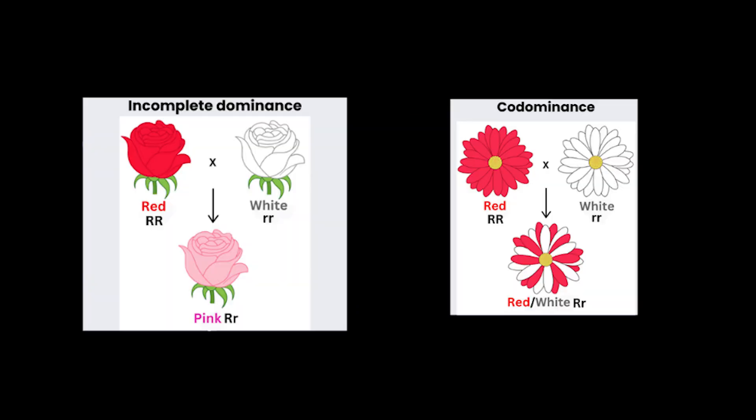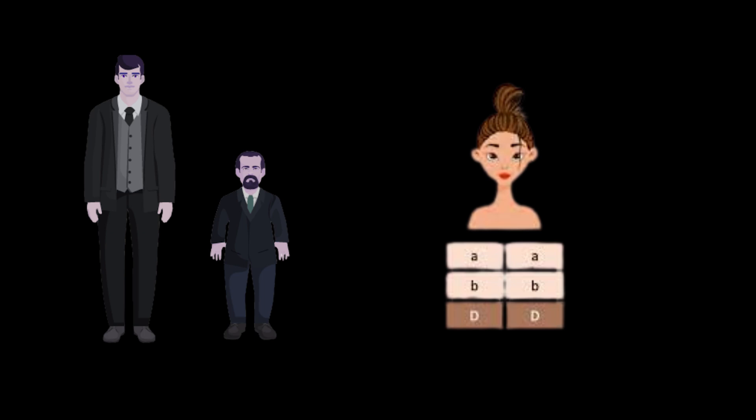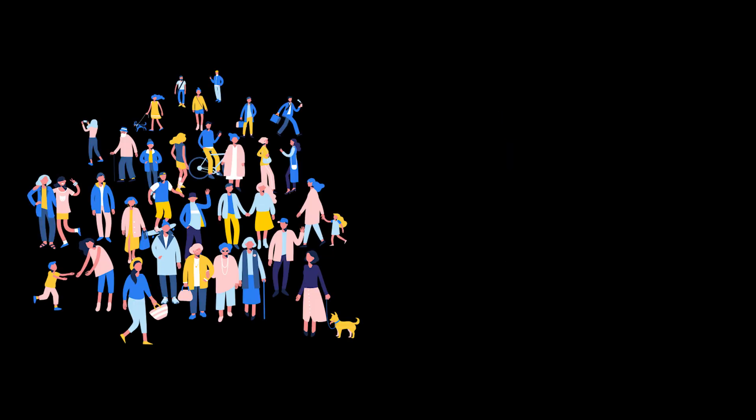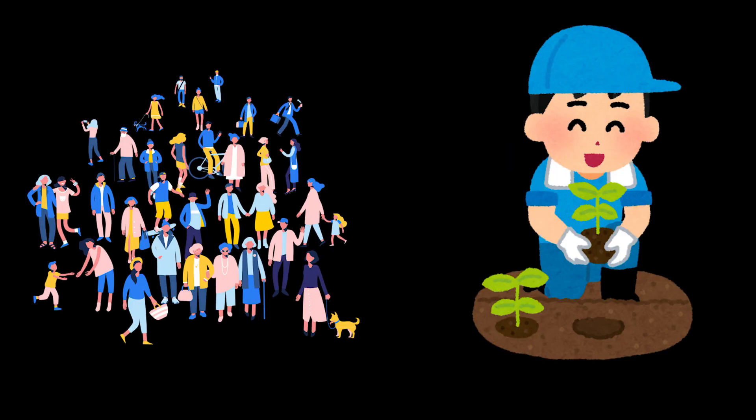There are more complex patterns. Incomplete dominance. Traits blend. Co-dominance. Both alleles show. Polygenic traits. Controlled by many genes. Height. Skin color. Multifactorial traits. Influenced by genes plus environment. Your DNA sets the instructions. Your environment helps decide how strongly they are followed.